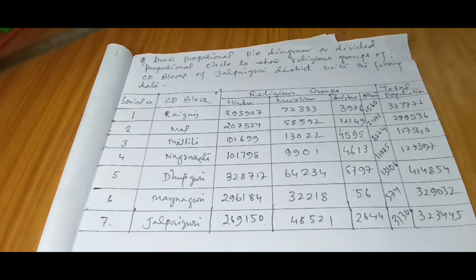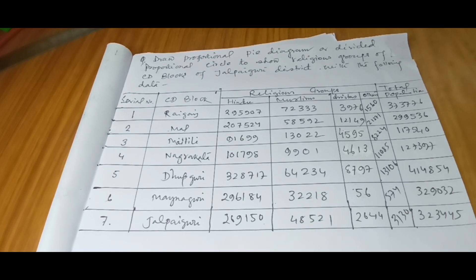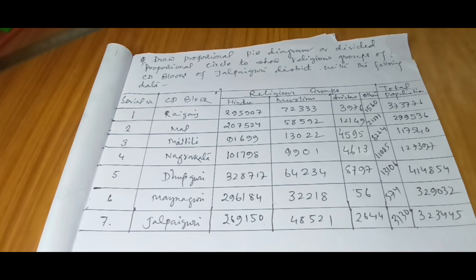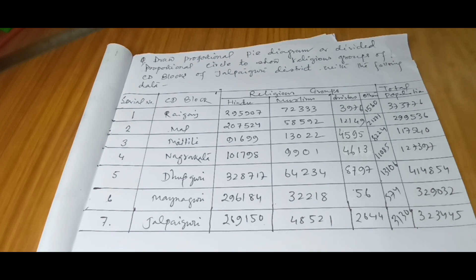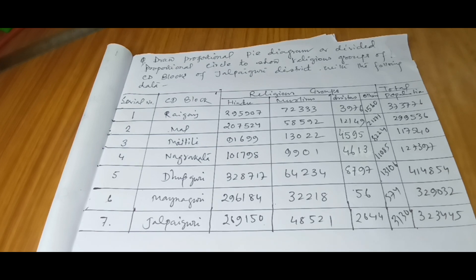Here, area of the circle denotes the population. This means if the population of place A is more, then when I am going to represent this with proportional pie diagram, area of that place A will be more. If the population is less in B, then its area will also be less. So area of the circle denotes the population.